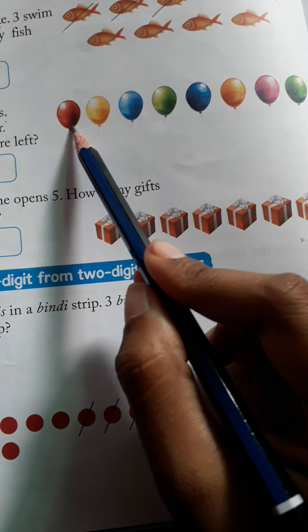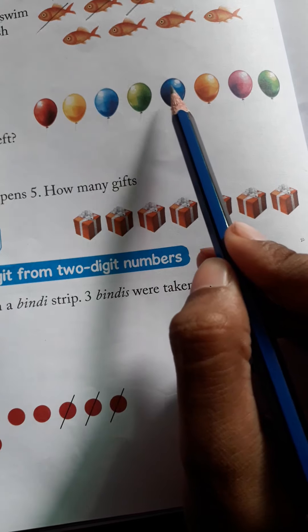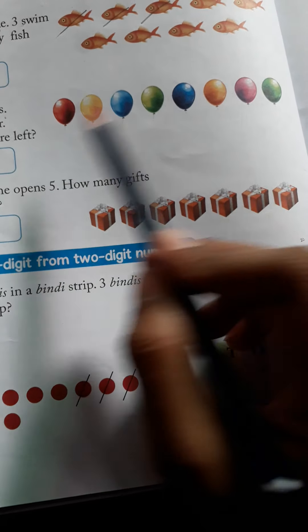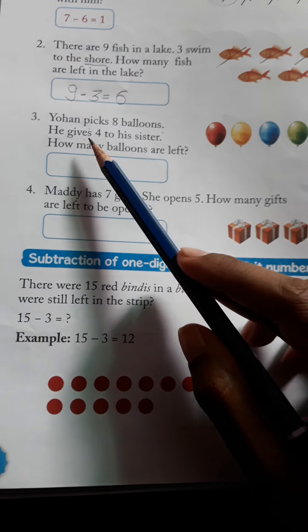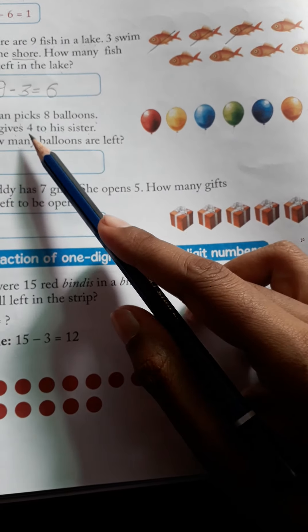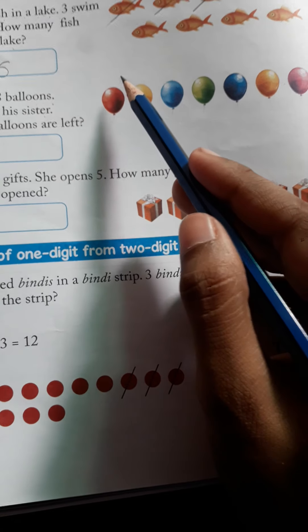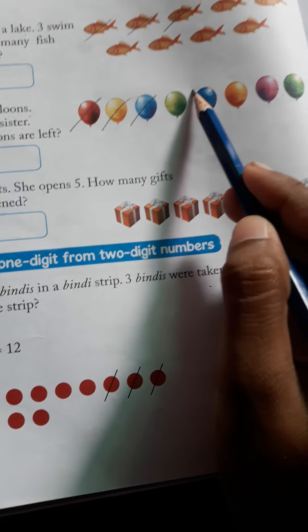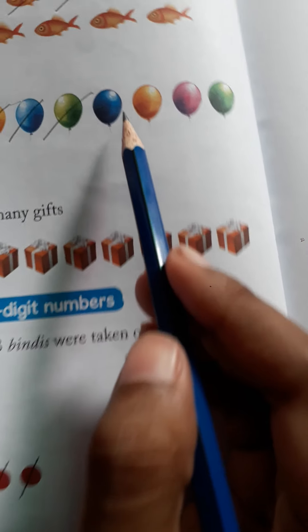Now see, let me count: 1, 2, 3, 4, 5, 6, 7, 8. So 8 balloons. And how many does Johan give to his sister? Johan gives 4 balloons to his sister. So we will cross out 4: 1, 2, 3, 4.